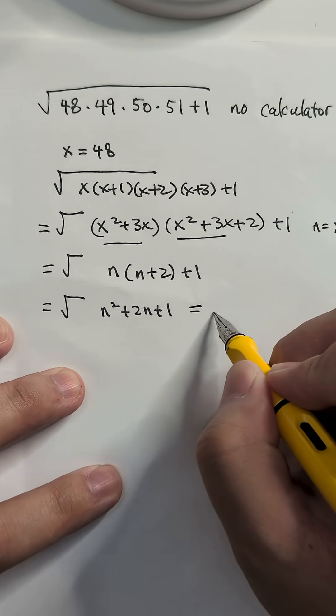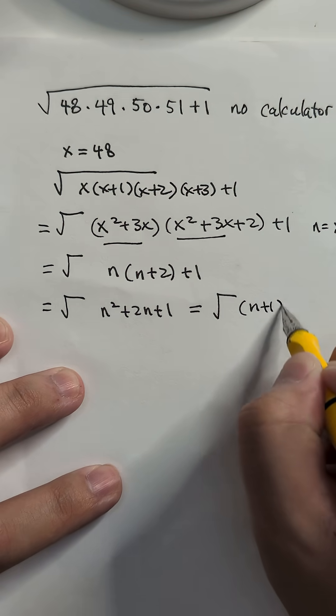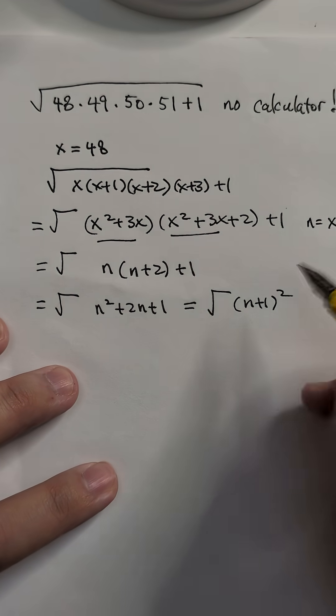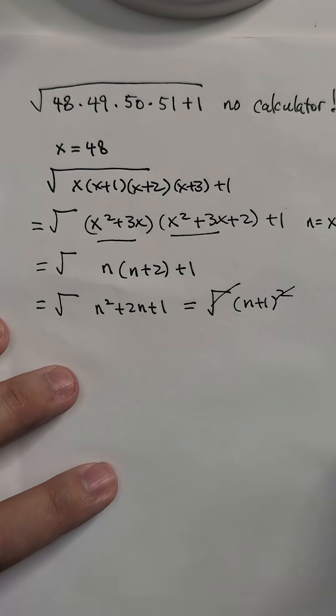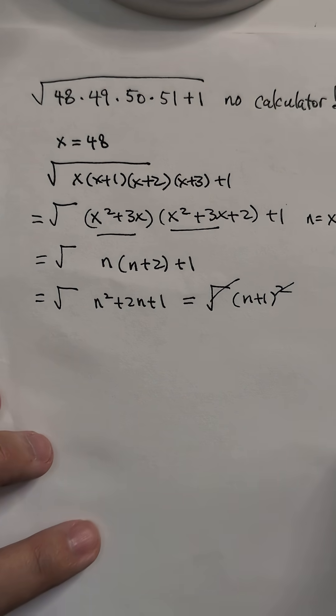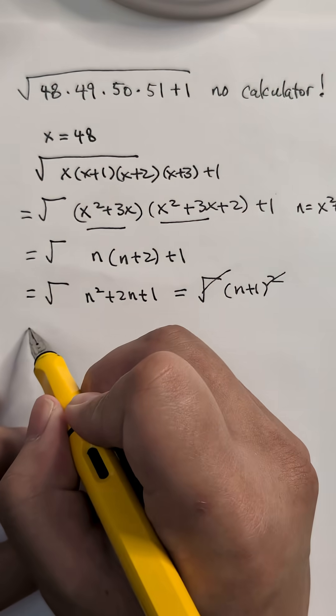And what is that? It's actually n plus 1 squared. Good. So get rid of that. So the answer is actually n plus 1, which is very neat.